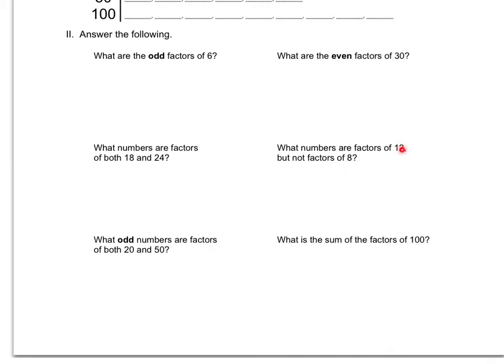What odd numbers are factors of both 20 and 50? So now you're going to again use this list up here. You're going to compare the factors of 20 to the factors of 50, and any ones that match, I would make a list and then I would circle the ones that are odd so that we know which ones are the odd factors. That's the easiest way for me, and then if you really want, you can erase the ones that are not odd.